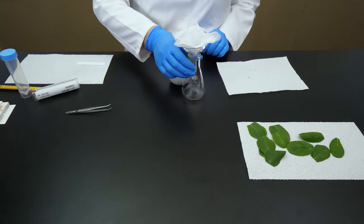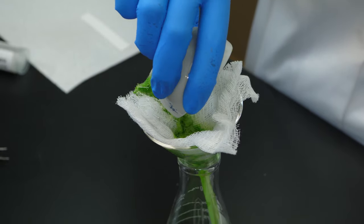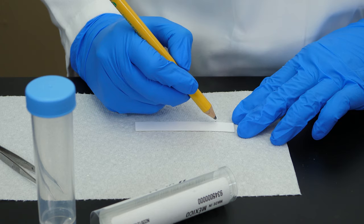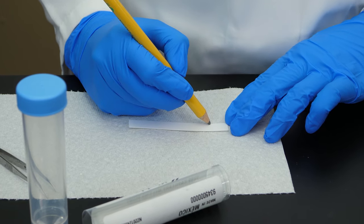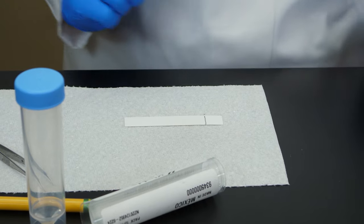After five minutes, we strain the contents to separate the leaf pieces from the pigments. Next, we take a thin strip known as a chromatography plate. With a pencil, we make a line near the bottom of the plate. This is the origin line.